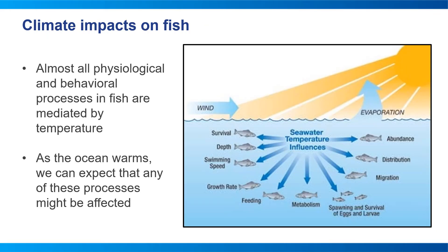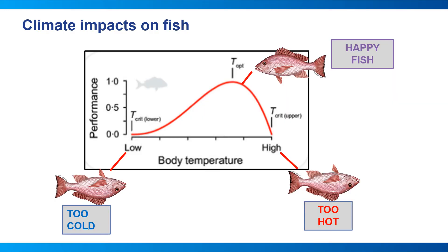Because fish are cold-blooded, almost all of their physiological and behavioral processes are mediated by ocean temperature. So as the ocean warms, we could expect that any of these processes might be affected — how fast they grow, their spawning success, where they're distributed. These processes are critical for fisheries because they can determine how easy it is to catch fish, how nutritious or valuable they are, or whether fish are available during legal fishing seasons or in legal fishing grounds. Fish are adapted to an optimal body temperature where their metabolism and biological processes function best. Outside of their optimal thermal envelope, they might get stressed, be susceptible to disease and parasites, grow more slowly, or have less reproductive success — and if subjected to temperatures beyond a critical threshold, they could even die.